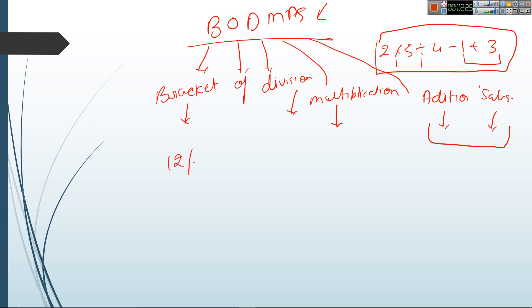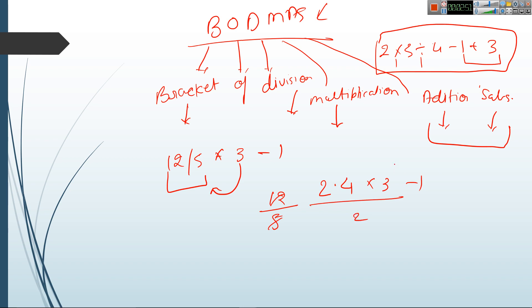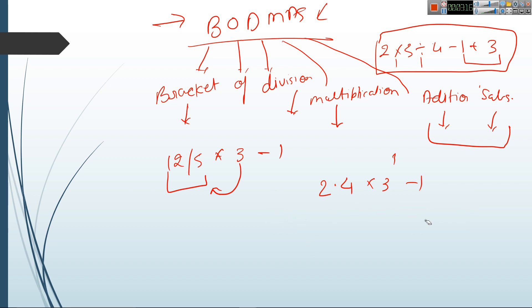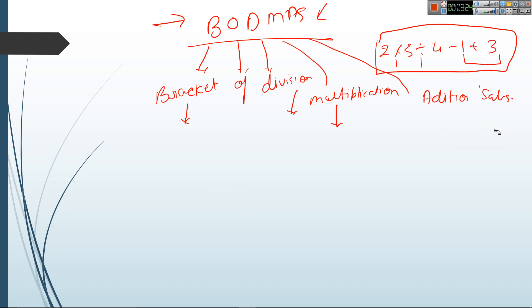Suppose there is a question: 12 divided by 5 multiplied by 3 minus 1. According to BODMAS, first divide: 12 divided by 5 is 2.4. Then multiply: 2.4 multiplied by 3 is 7.2. Then subtract 1, giving an answer of 6.2. You must solve using the BODMAS rule because if you do subtraction first and then multiplication or division, your answer will always be wrong. Follow this approach — it is very important for simplification.